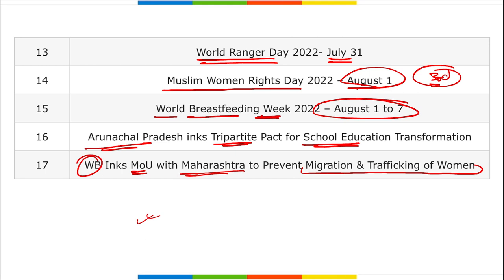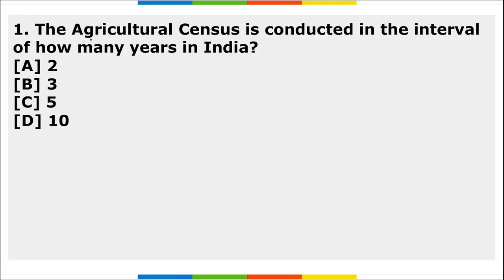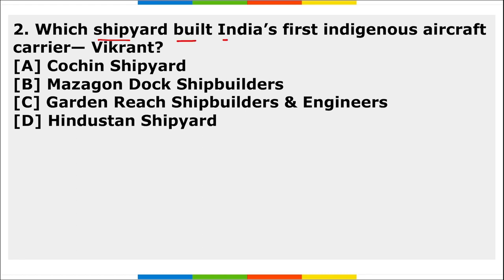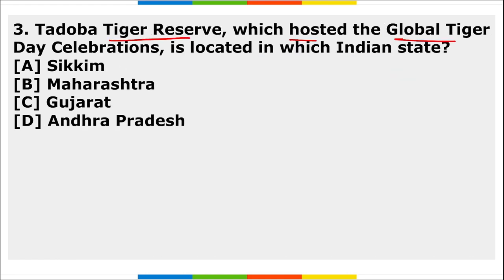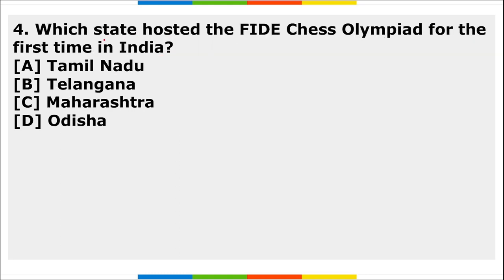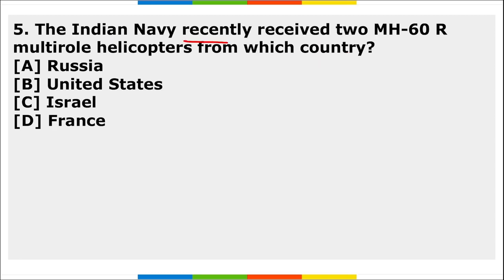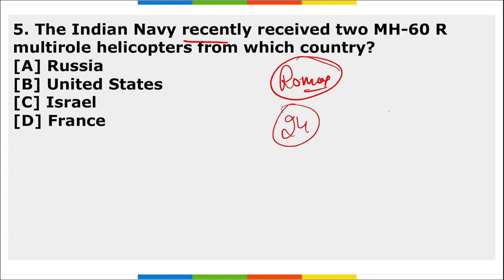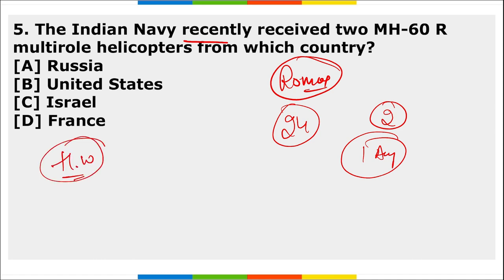Now for your homework. First: the agriculture census is conducted at an interval of how many years in India? Second: which shipyard built India's first indigenous aircraft carrier, INS Vikrant? Third: Tadoba Tiger Reserve, which hosted Global Tiger Day celebrations, is located in which Indian state? Fourth: which state hosted the 44th Chess Olympiad for the first time in India? Fifth: the Indian Navy recently received two MH-60R Romeo multi-role helicopters from which country? A total batch of 24 will be received — comment your answers below.